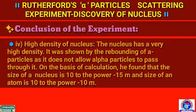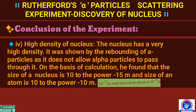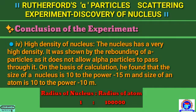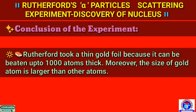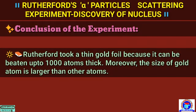On the basis of calculation, the size of a nucleus is 10 to the power minus 15 meters and the size of an atom is 10 to the power minus 10 meters. So the radius of the nucleus is 1 and the radius of an atom is 1 lakh. Rutherford took a thin gold foil because it can be beaten up to 1000 atoms thick. Moreover, the size of a gold atom is larger than other atoms.